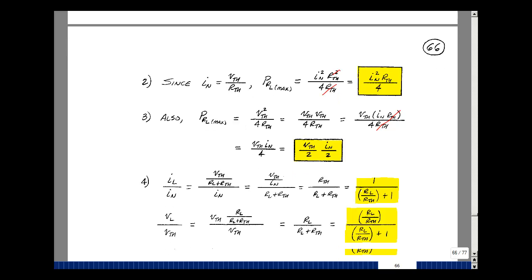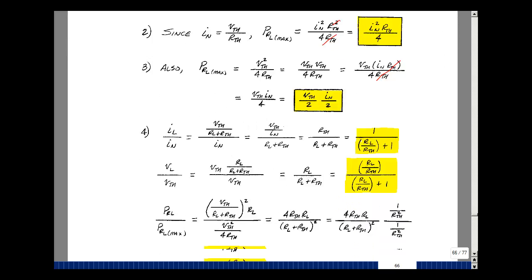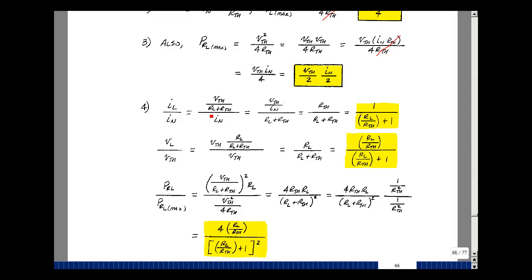What we want to do next is normalized plotting — a technique in engineering to look at an answer for a large range of values of a particular variable. Our load current is V-Thevenin over R sub L plus R-Thevenin, and I-Norton equals V-Thevenin over R-Thevenin. Dividing numerator and denominator by one over R-Thevenin, I get the ratio of the load current to the Norton current in terms of the ratio of R sub L to R-Thevenin: I sub L over I-Norton equals one divided by R sub L over R-Thevenin plus one.